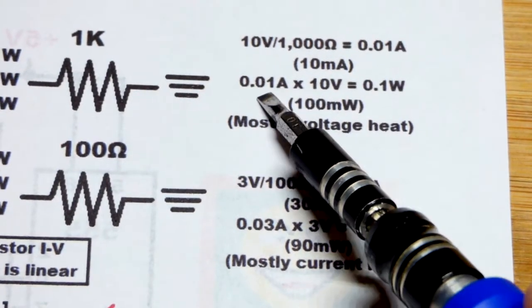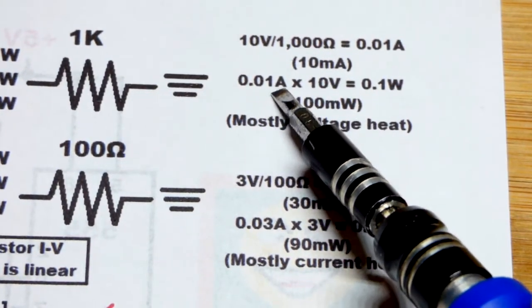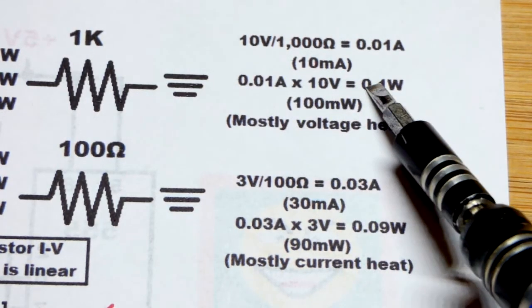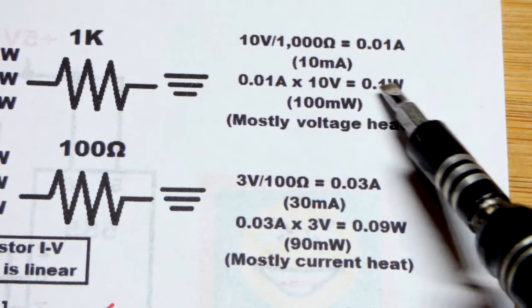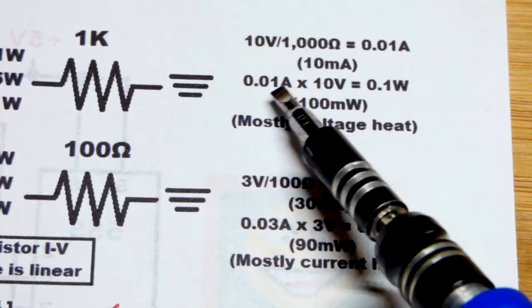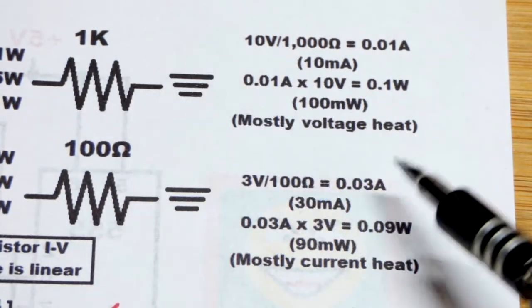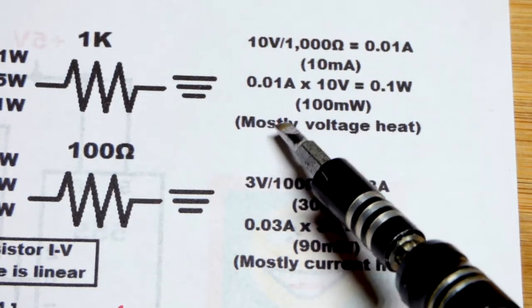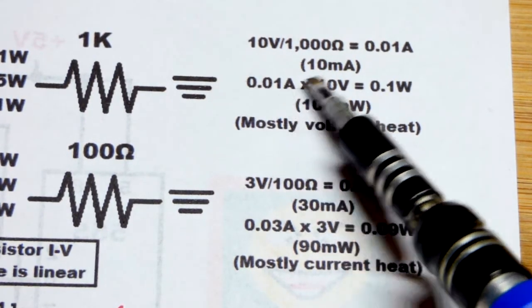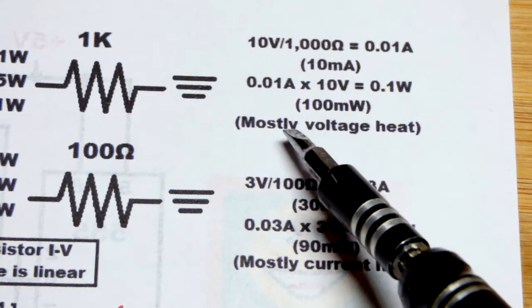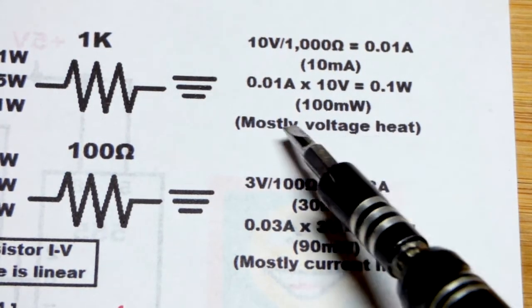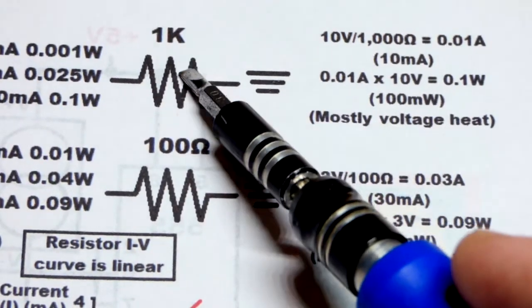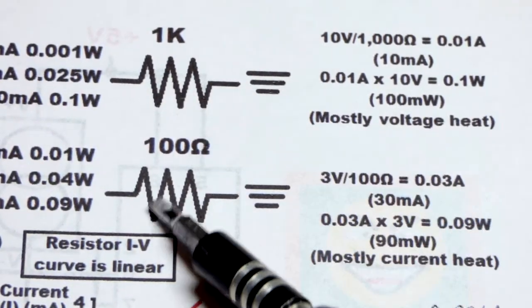Now we got ten milliamps right there, 0.01 amps, times ten volts equals 0.1 watts. So that's almost 0.125 watts. We don't really want to go up in voltage anymore. That's the voltage across the resistor. So you can see we got 100 milliwatts and the current's not terribly high. The voltage is relatively high. So the heat that we're getting now is mostly from the higher voltage right there.